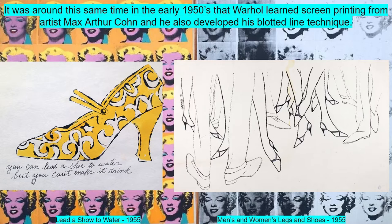He also developed his blotted line technique, which involved applying ink to paper and transferring it by blotting while it was still wet. He was able to repeat the basic process over and over to create a basic image with endless variations. This is also when he began to drop the letter A from the end of his last name after it was left out in an editing error, and he became known as Andy Warhol instead of Warholla.